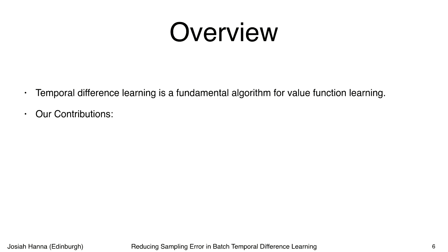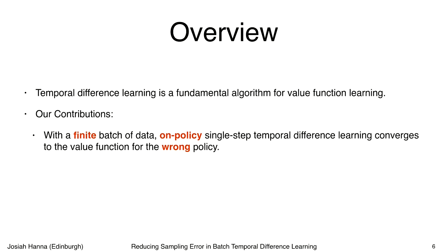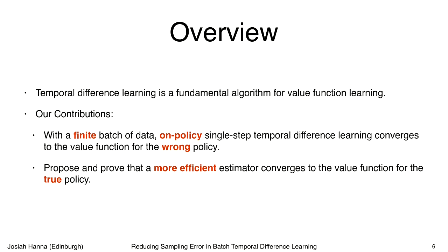Taking temporal difference learning as a starting point, the contributions of our paper are: first, we analyze TD learning and show that with a finite batch of data, on-policy single-step temporal difference learning — the simplest variant — converges to the value function for the wrong policy. Previous results consider the case of infinite data, in which TD learning converges correctly. But we're looking at what happens with a finite amount of data. After analyzing this problem, we propose a new estimator, a new method for learning value functions, which is more efficient using a finite batch of data and thus converges to a more accurate value function.